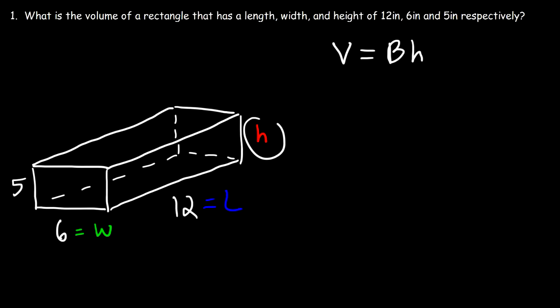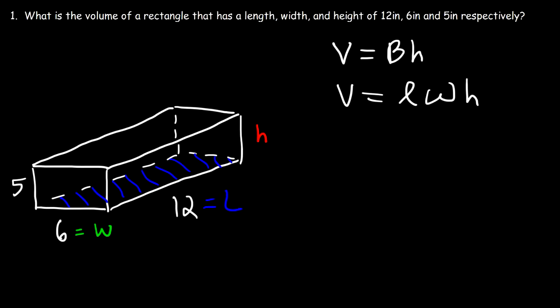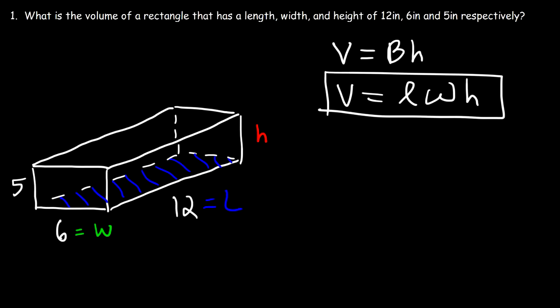So we already have the height in this equation. But what is the area of the base? In this particular picture, this is the base of the rectangular solid. The area of that blue portion is basically the length times the width. So we can replace B with L times W. The volume of a rectangular prism is simply the length times the width times the height.